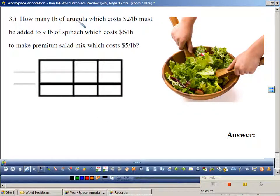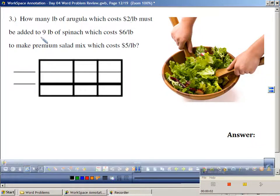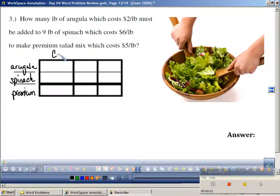How many pounds of arugula, which is like a fancy salad, which costs $2 a pound, must be added to 9 pounds of spinach, which costs $6 a pound, to make a premium salad mix, which costs $5 a pound? What are we putting together and making? Salad. We're making a premium salad. What are the ingredients of this premium salad? Arugula and spinach. That means I'm going to have to fill in all the boxes, because I don't normally get this final answer, this total. We're going to have to find it.